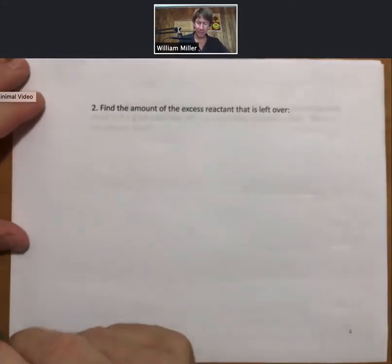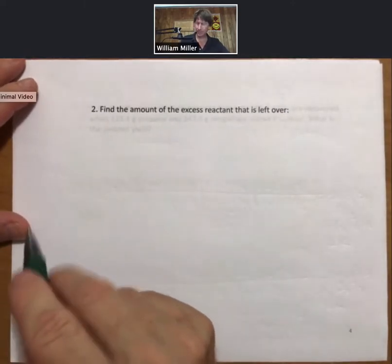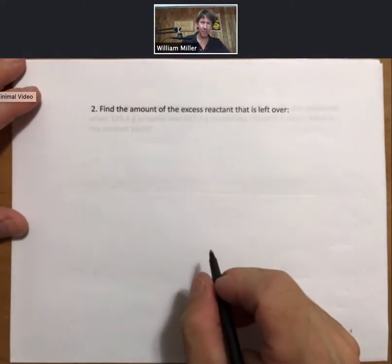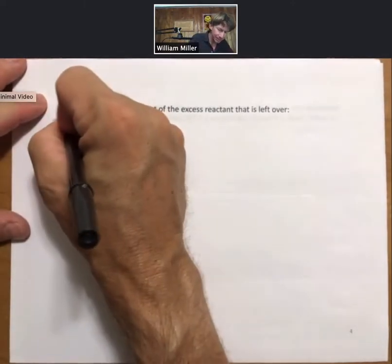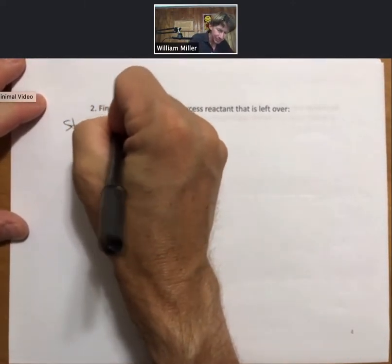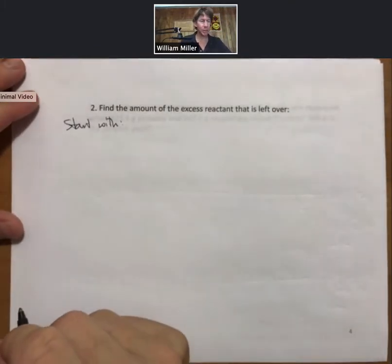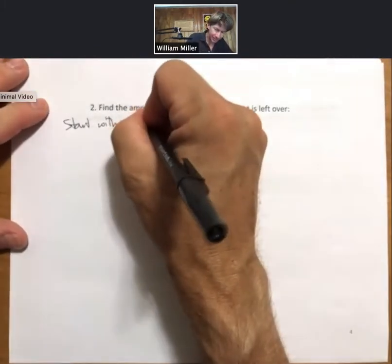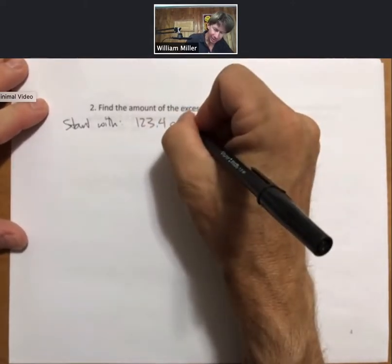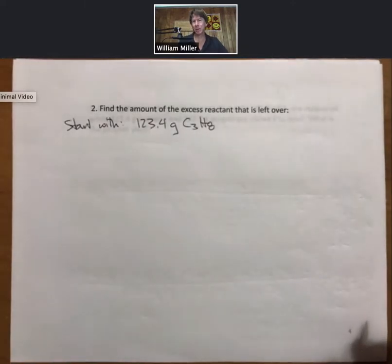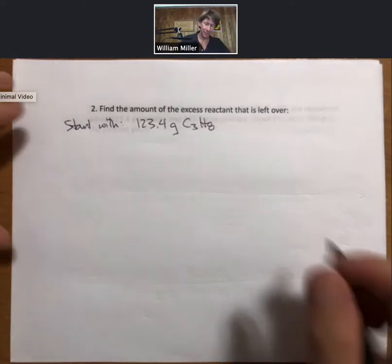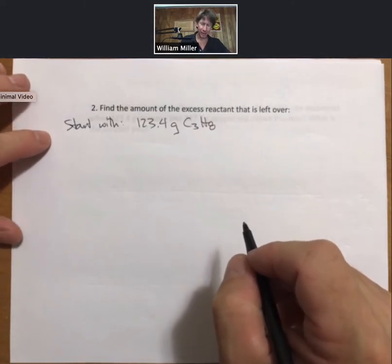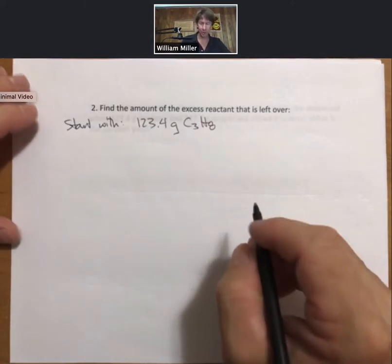Now let's find the amount of the excess reactant that is left over. Our process goes something like this. We know that we started with 123.4 grams of propane. And I guess I should say, we know that propane is our excess reactant because it was not all used up. So only two choices here: limiting and excess. Now we have to find the amount of propane that was reacted away.